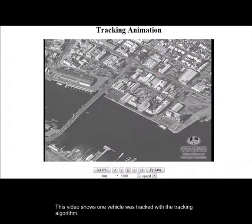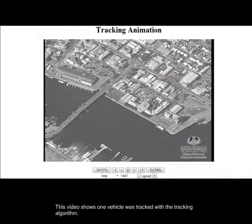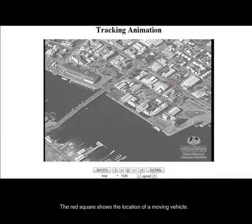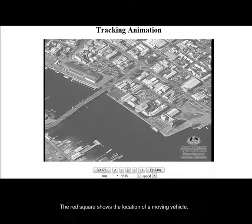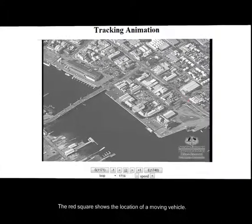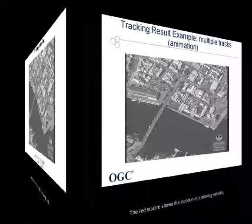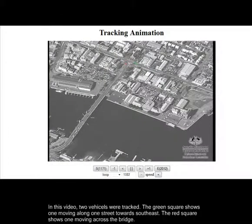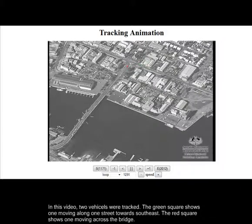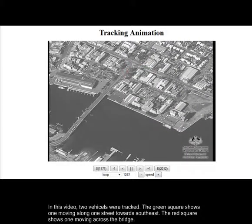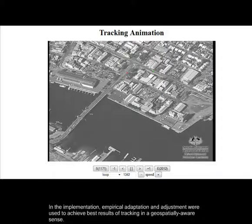This video shows one vehicle tracked with the tracking algorithm. The right square shows the location of a moving vehicle. Multiple targets can be tracked simultaneously. In this video, two vehicles were tracked. The green square shows one moving along one street toward southeast, and the right square shows one moving across the bridge.